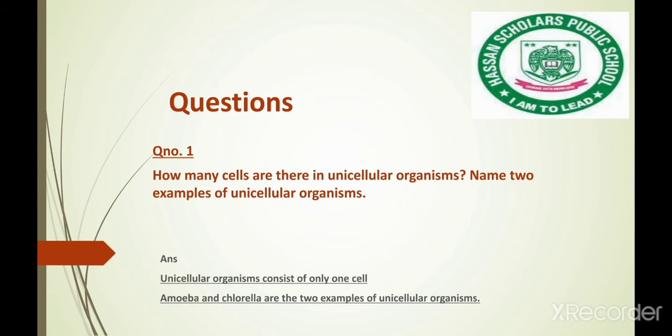We have two examples of unicellular organisms. Unicellular organisms consist of only one cell. Amoeba and Chlorella are two examples of unicellular organisms — these are organisms that are made up of only one cell.